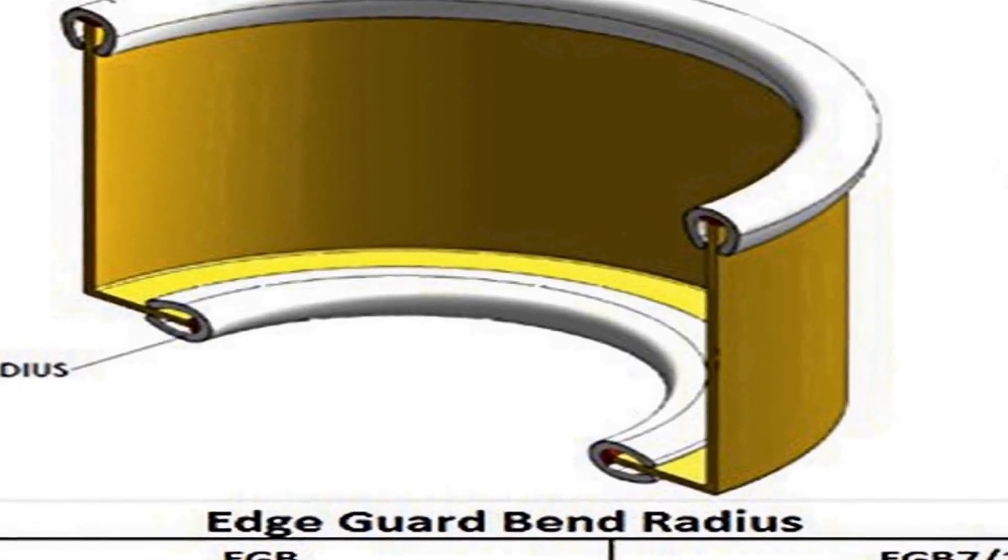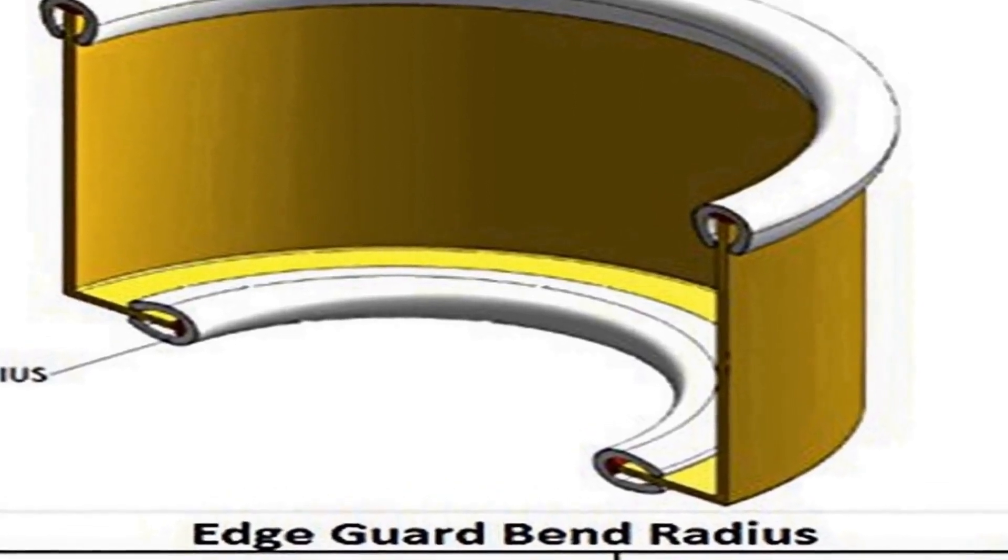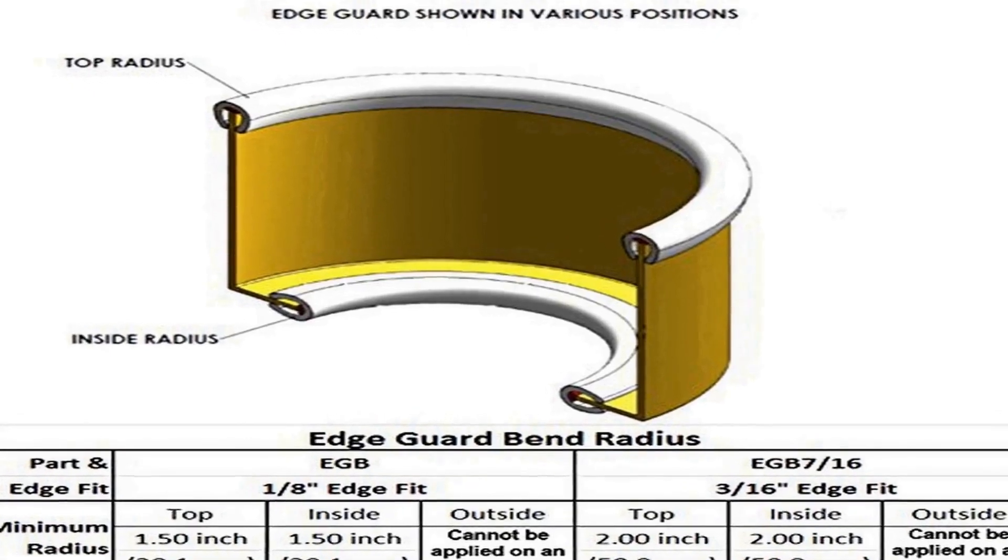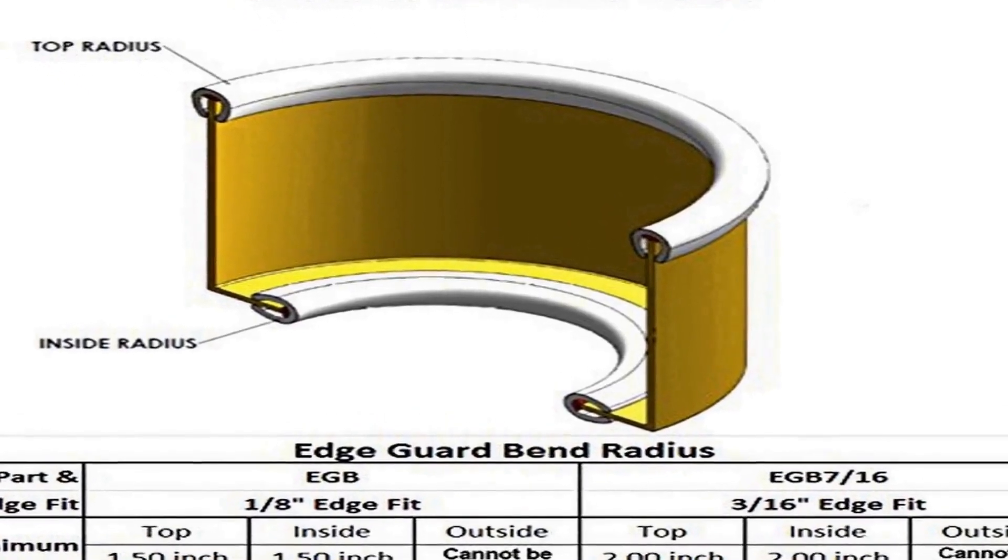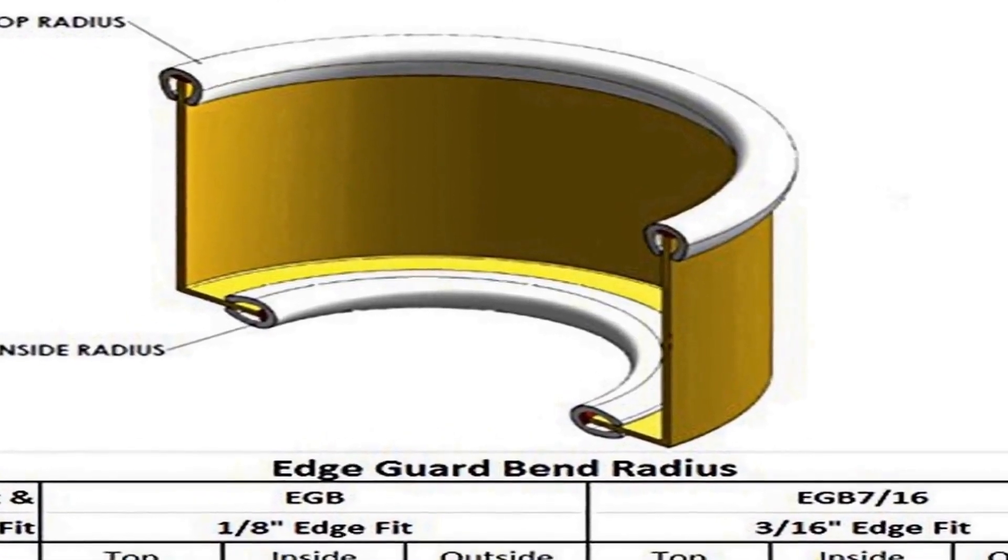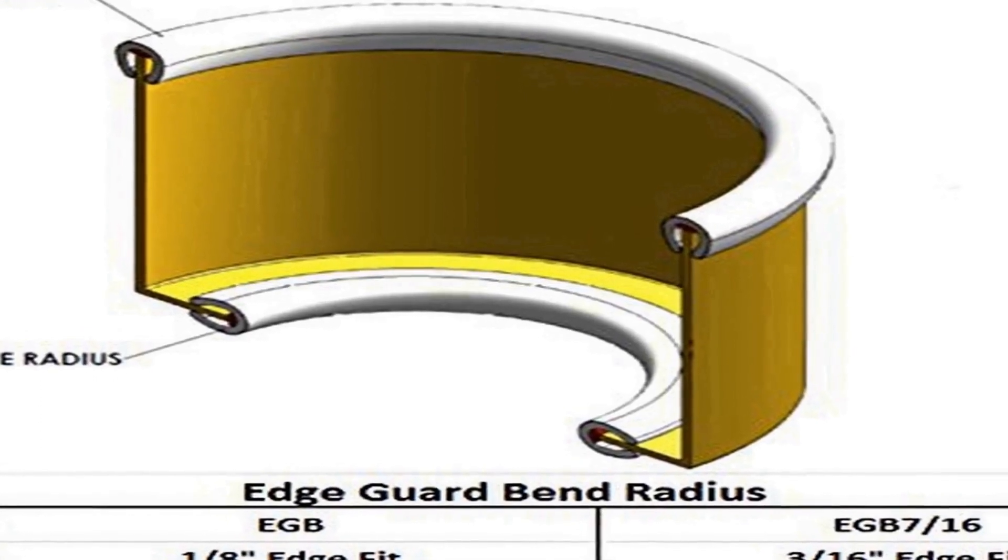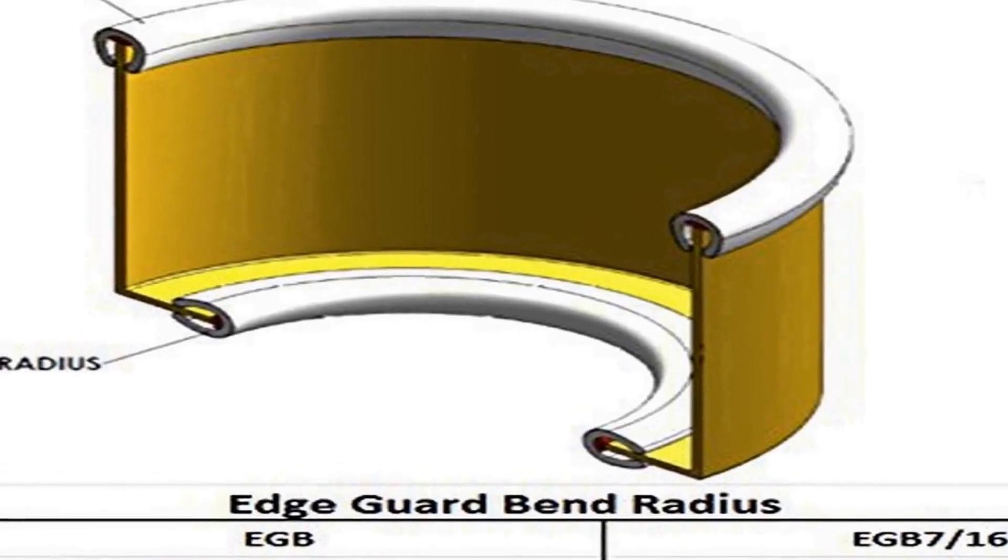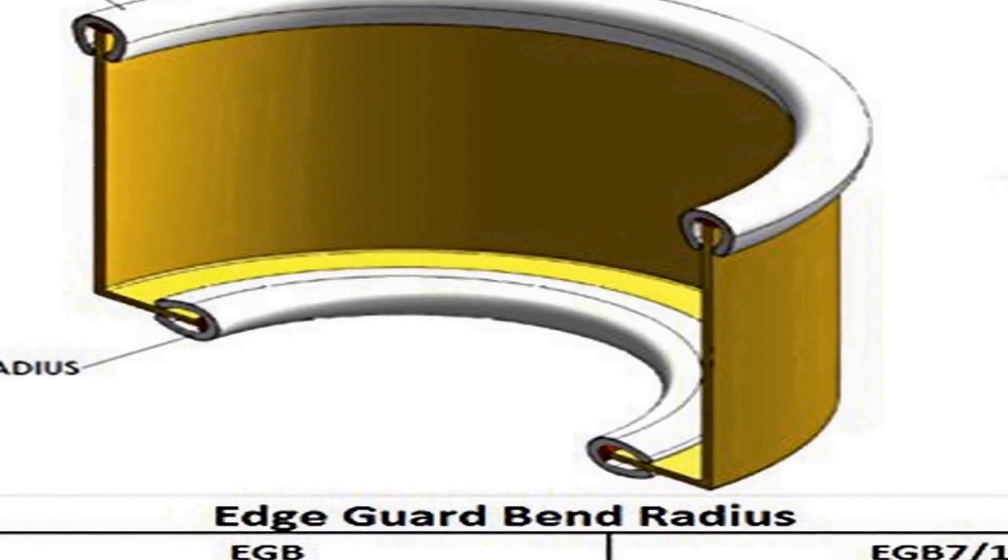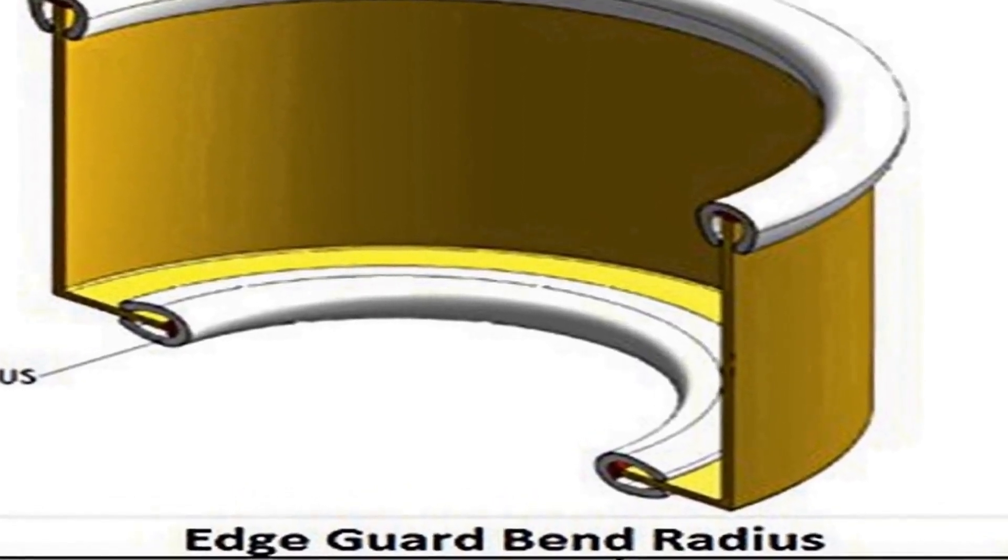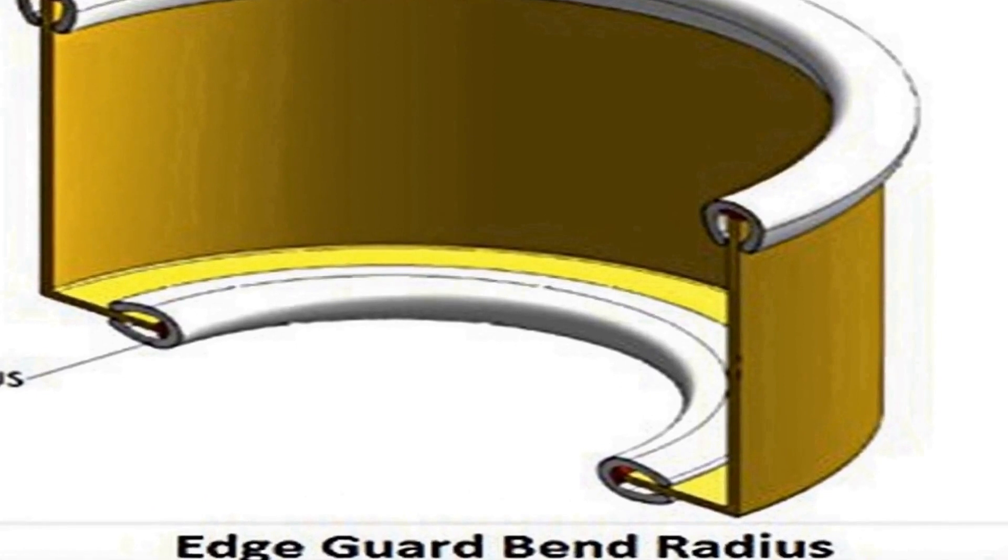It offers an attractive black finish that not only enhances protection but also adds an aesthetic touch to your objects. With a generous 100-foot length, you'll have plenty of material to tackle multiple projects without the need for frequent replacements. The Trim Lock Edge Guard is a reliable and cost-effective solution for safeguarding edges in various environments, making it a valuable addition to your DIY or maintenance toolkit.